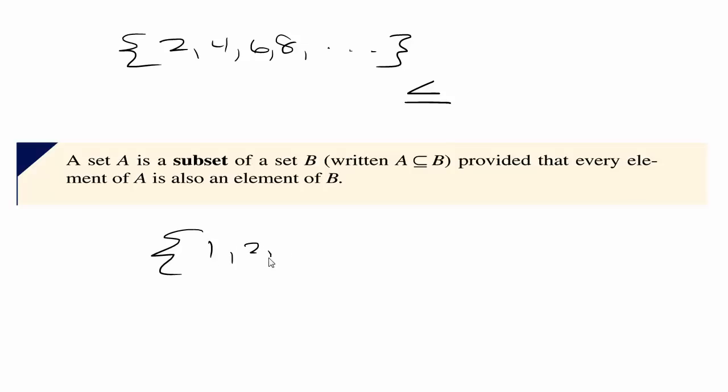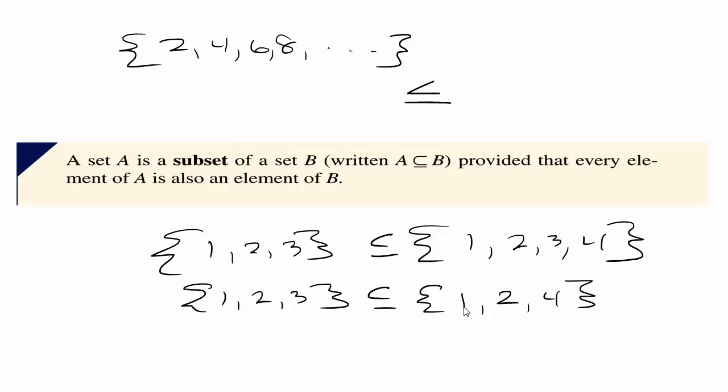So let's look at one other thing. 1, 2, 3 is a subset of 1, 2, 3, and 4. But what about is 1, 2, 3 a subset of 1, 2, and 4? Two of them are in there but because 3 isn't in the set on the right then it is not a subset.